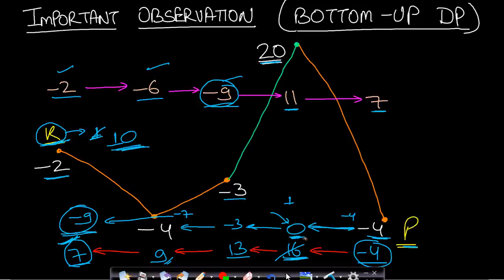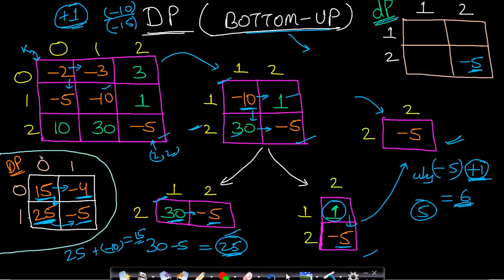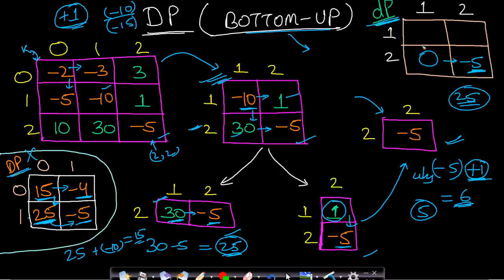Now let us solve the full example. We write 0 whenever we encounter a positive number. The last cell 2,2 gets value minus 5. Cell 2,1 has cost 30 and right neighbor value minus 5: 30 + (minus 5) = 25, which is positive, so we write 0. Cell 2,0: current cost 10 plus dp[2,1]=0 gives 10, positive, so write 0. Cell 1,2: current cost 1 plus dp[2,2]=minus 5 gives minus 4.